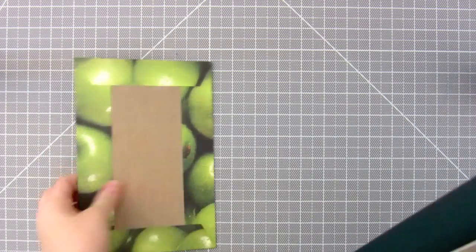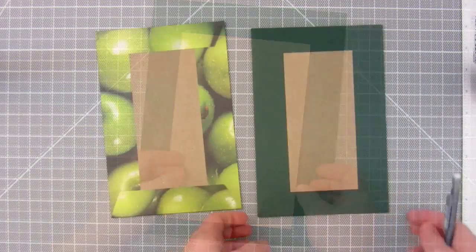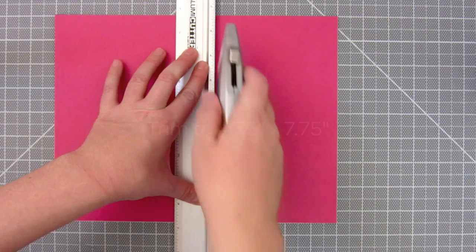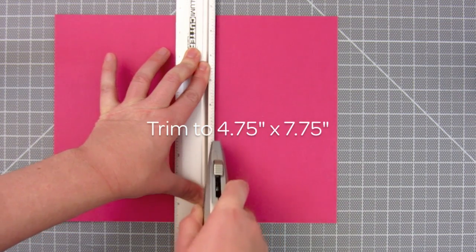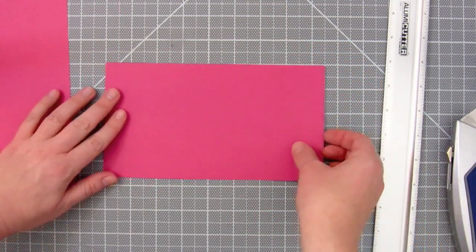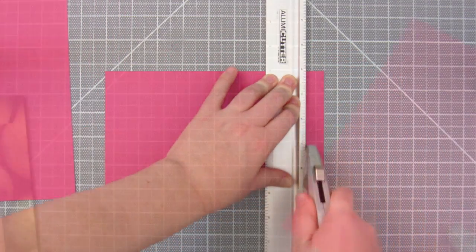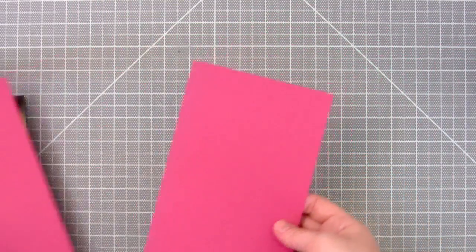Repeat the same process on the other cover. After both covers are wrapped, make the inside covers. For this book, you should be able to trim these from one 8.5x11 piece of paper. Then glue them onto the covers.